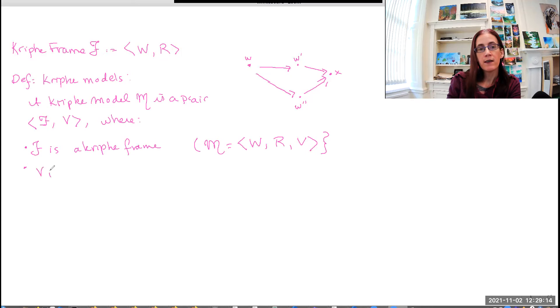And V is what's called a valuation function, which goes from the individual proposition letters that we have and possible worlds to truth values. So they can either be true or they can be false. We're not dealing with any fuzzy logics or many valued logics or probabilistic logics. This is just boring old vanilla, classical modal logic.